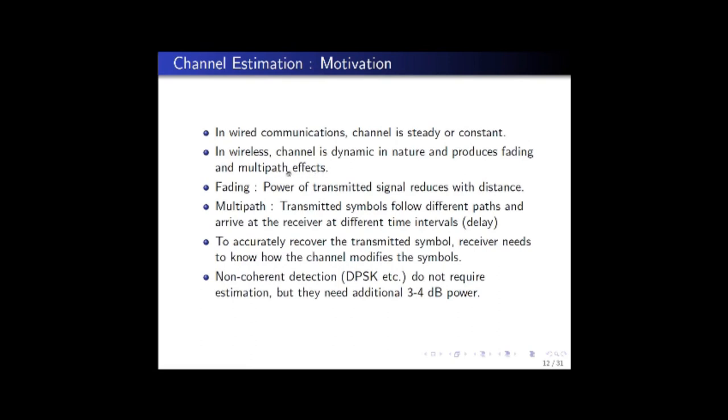The fading and multipath effects are caused because the transmitted signal undergoes a number of reflections, diffractions, and scattering on its way to the receiver. Fading essentially means that the power of the transmitted signal reduces with distance, and multipath propagation makes the transmitted symbol follow diverse paths and arrive at the receiver at different time instances with certain delay from each other. Hence, to accurately recover a transmitted symbol in a wireless environment, a channel estimator is inevitable.